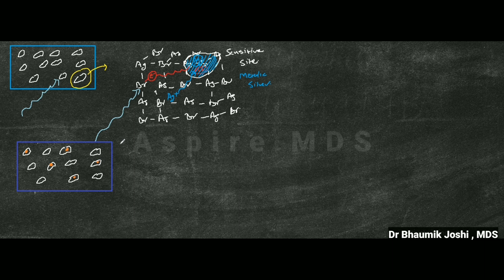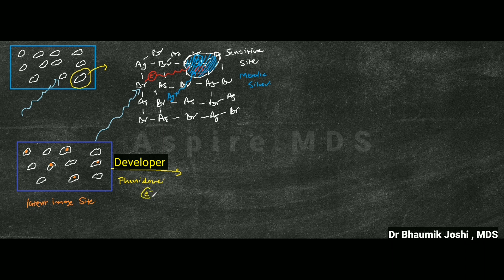Now you put this film in developer. The content of developer known as phenidone will donate electrons, and these electrons will go and act on the latent image sites, converting them into solid grains of silver.